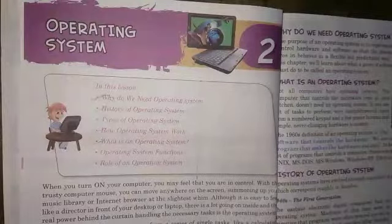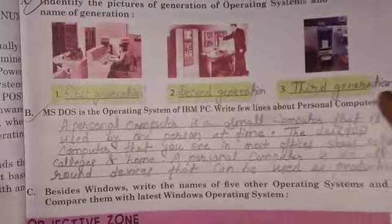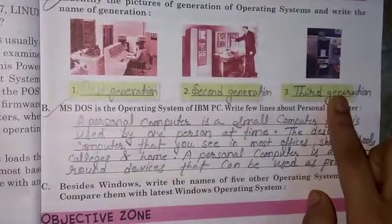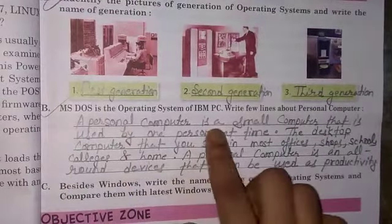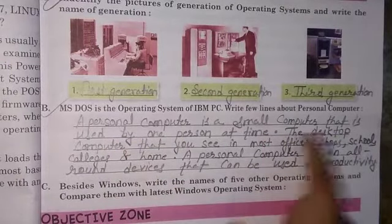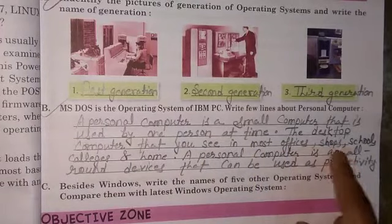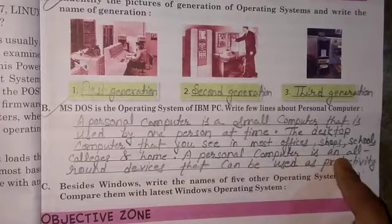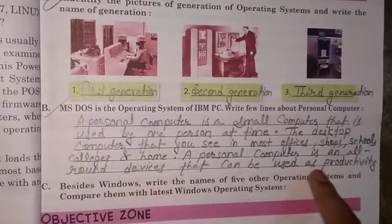Lesson 2. First Generations, Second Generations, Third Generations. A personal computer is a small computer that is used by one person at a time. The desktop computers that you see in most offices, shops, schools, colleges, and home. A personal computer is an all-round device that can be used and be productive.